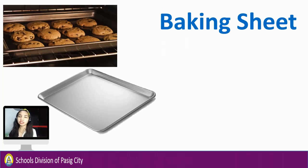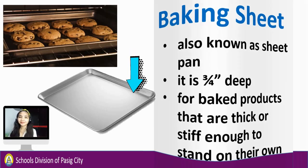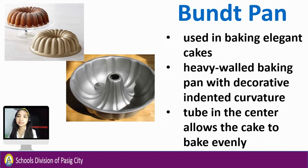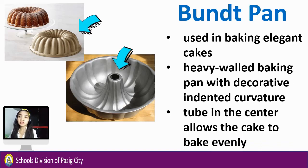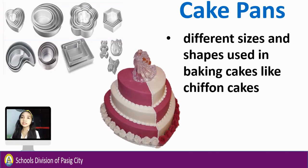Let's start with baking sheet, also known as sheet pan. It is 3–4 inches deep, used for baking products that are stiff enough to stand on their own, like cookies. Band pan is used in baking elegant cakes — a heavy-walled baking pan with decorative indented curvature; the tube in the center allows the cake to bake evenly. Cake pans come in different sizes and shapes and are used in baking cakes like chiffon cakes.